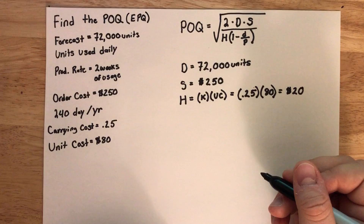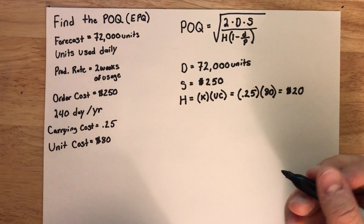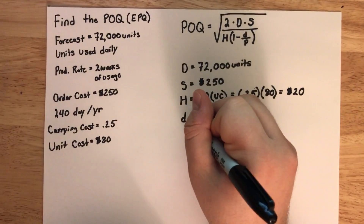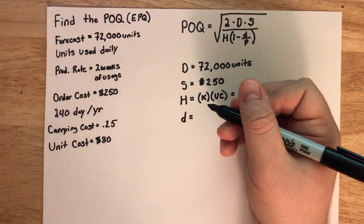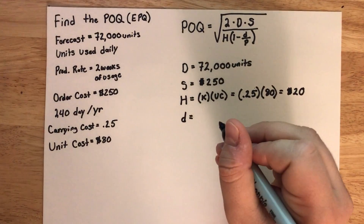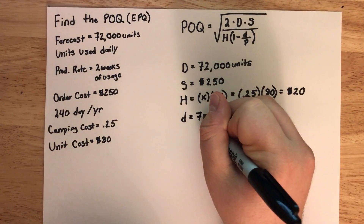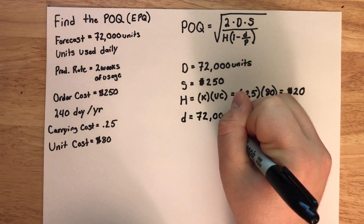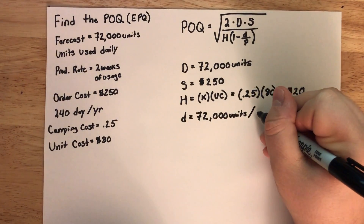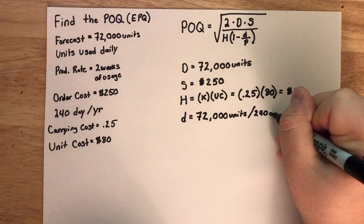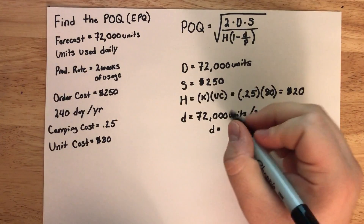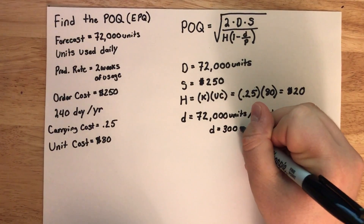Our next variable we need to find is lowercase d, which is daily demand. We know that daily demand is one day's worth of demand. We know how many days the factory works per year and we know the yearly demand. Given that, we can do a quick calculation: we take the yearly demand of 72,000 units and divide that by how many days the factory works per year, which is 240 days. Doing a quick division, we find that lowercase d is equal to 300 units per day.